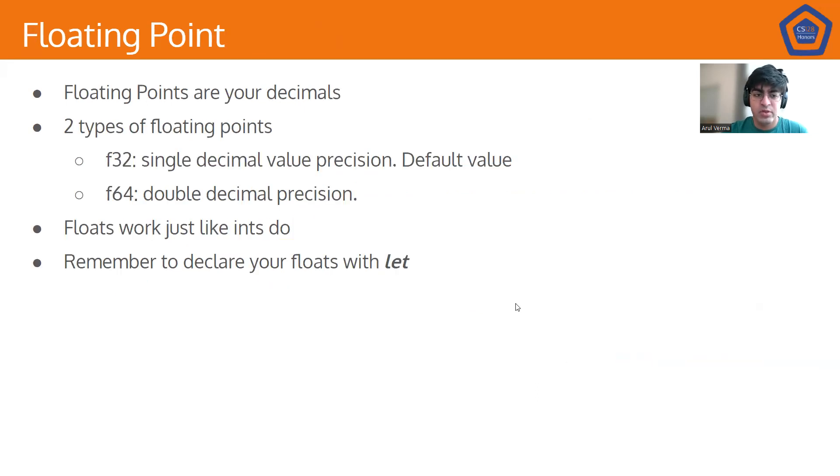So, floating points are the same thing as your decimals. There are two types of floating points. F32, which is a single decimal value precision, or double decimal precision, which is F64. This is the more precise version of float, but it also has significantly more storage overhead. Floats work just like ints, and you don't have to use the type declaration, but you do have to declare them with let.